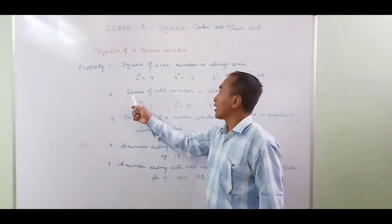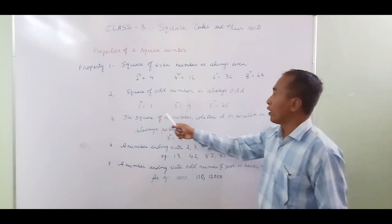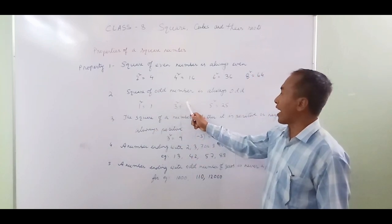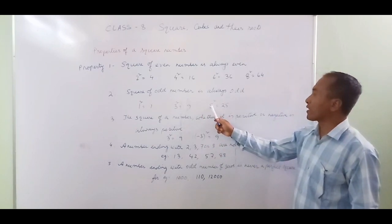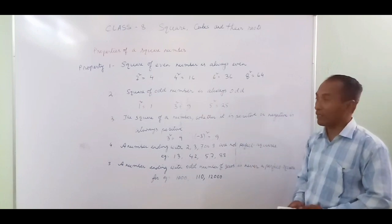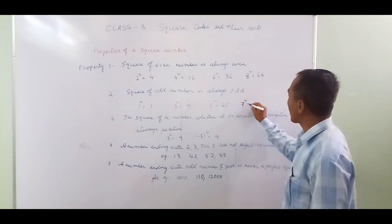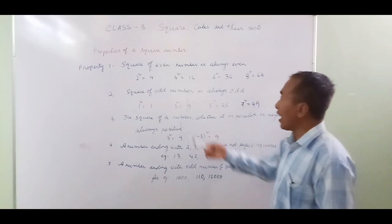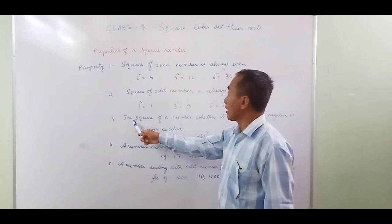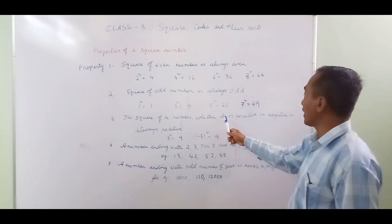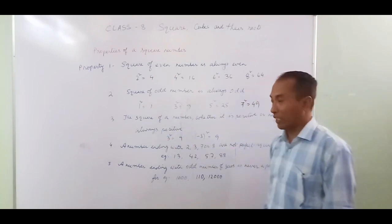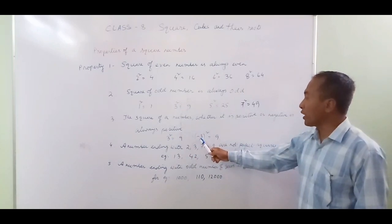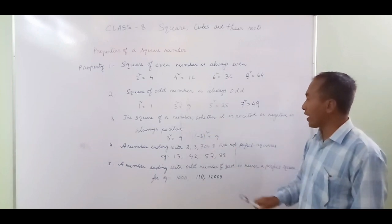For example, 1 squared is 1, 3 squared is 9, 5 squared is 25, 7 squared is 49 — all odd numbers. Property 3: the square of a number, whether positive or negative, is always positive. For example, 3 squared is 9 (positive), and negative 3 squared is also 9 (positive). So both negative and positive squares give a positive result.